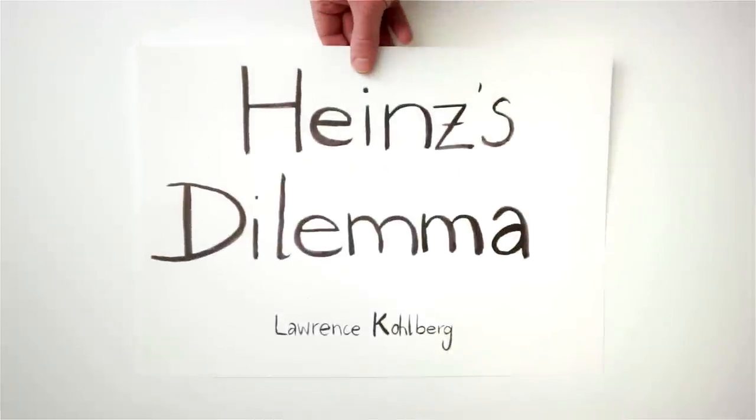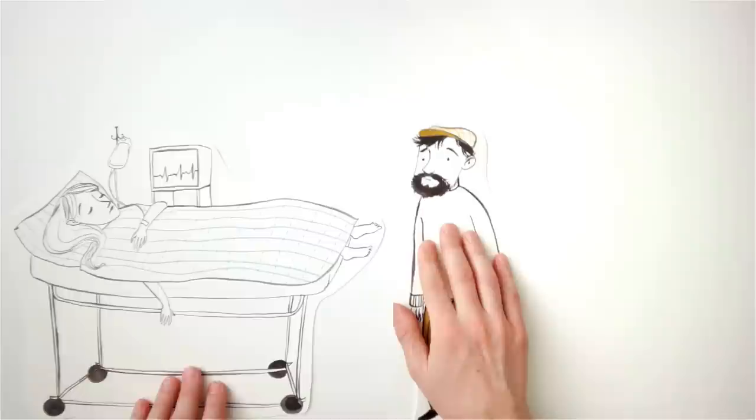Heinz's Dilemma. Heinz's wife is dying because of a special kind of cancer. There's only one drug that the doctors think might save her. It is a new formula which a pharmaceutical company in the same town has recently discovered.